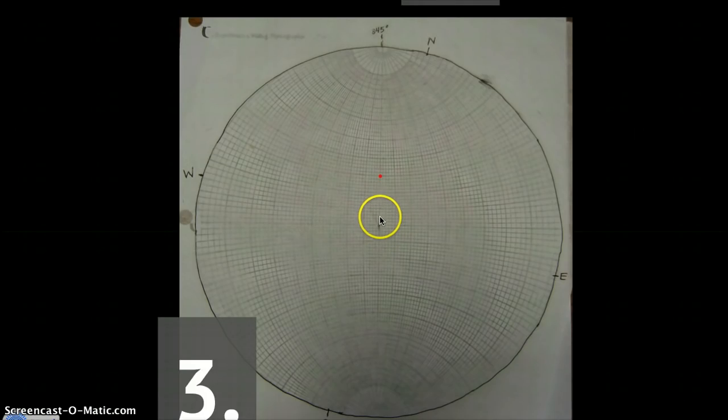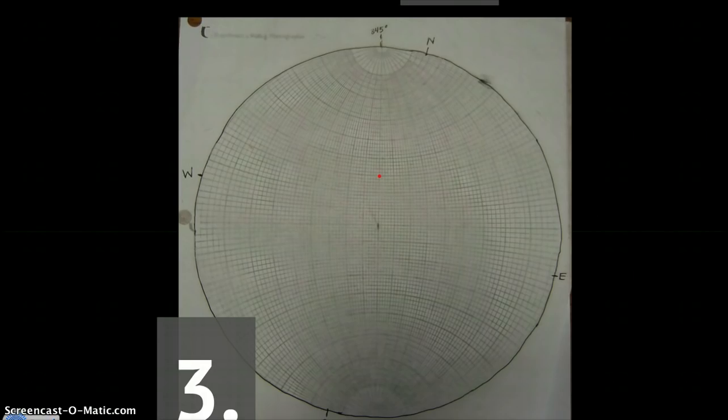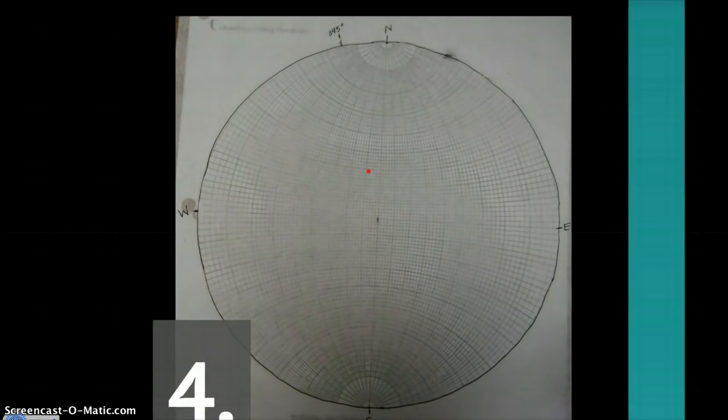I counted up 30 degrees from the center. Here's the center. And each of these lines is 10, 20, 30, and I plotted a closed circle. Then I turned north again so it is aligned with north on the stereonet.